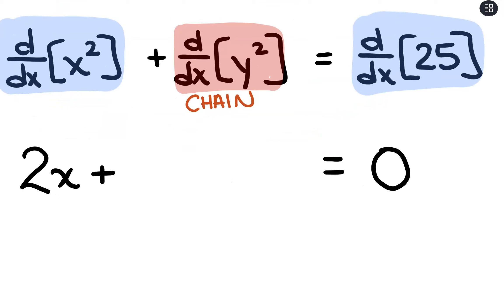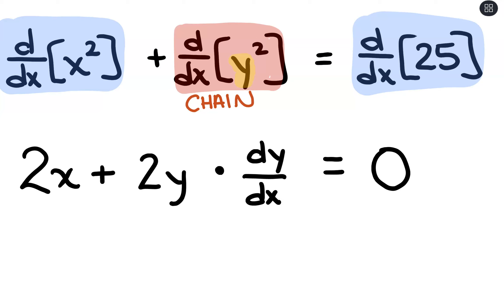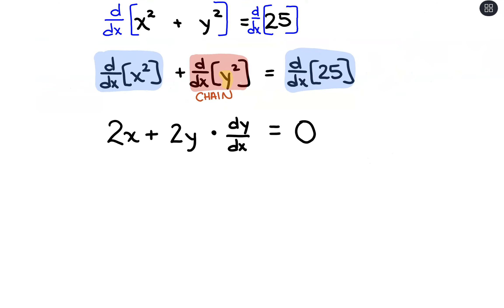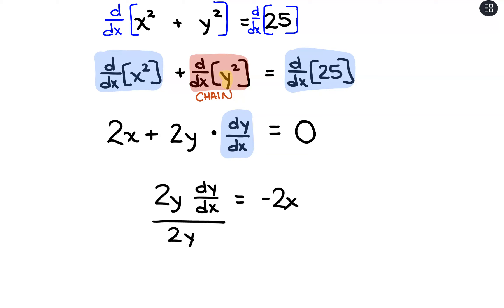So going back to the equation, we have 2x plus 2y times dy/dx equals 0. Now we solve for dy/dx: subtract 2x from both sides to get 2y times dy/dx equals negative 2x, then divide both sides by 2y to completely isolate dy/dx. That gives us dy/dx equals negative x over y.